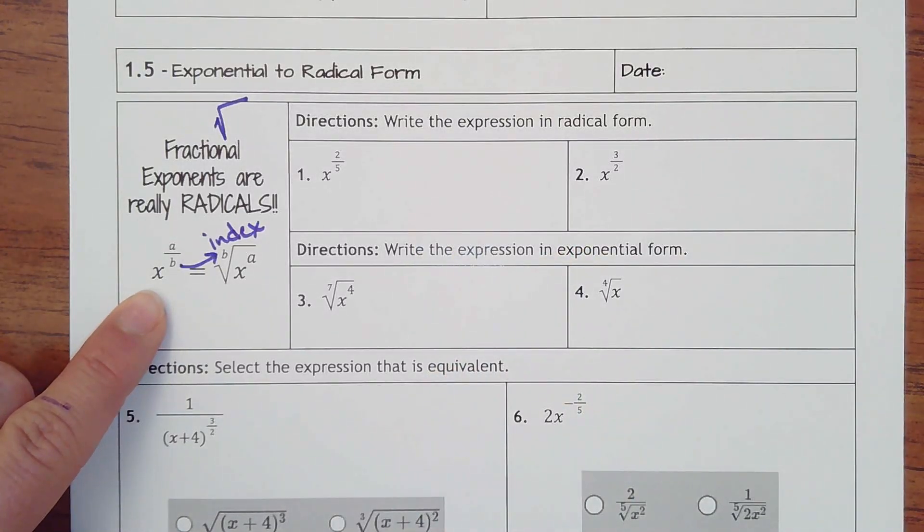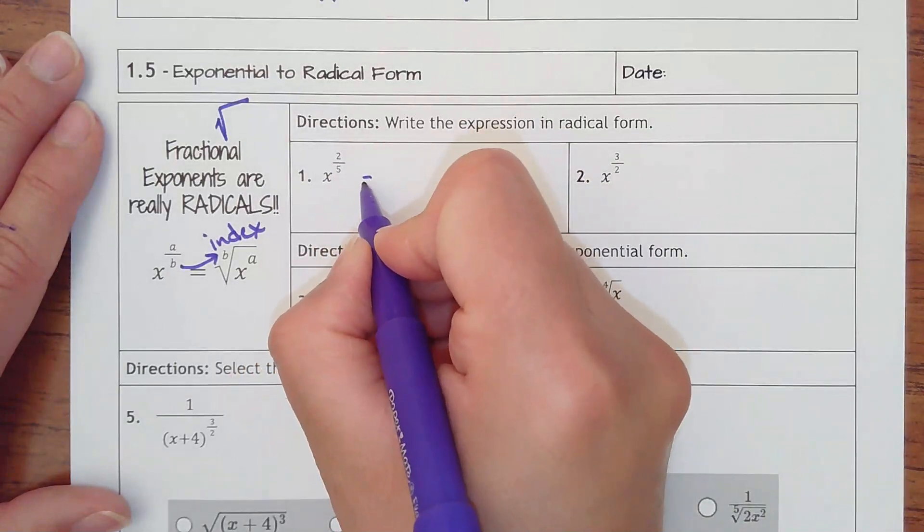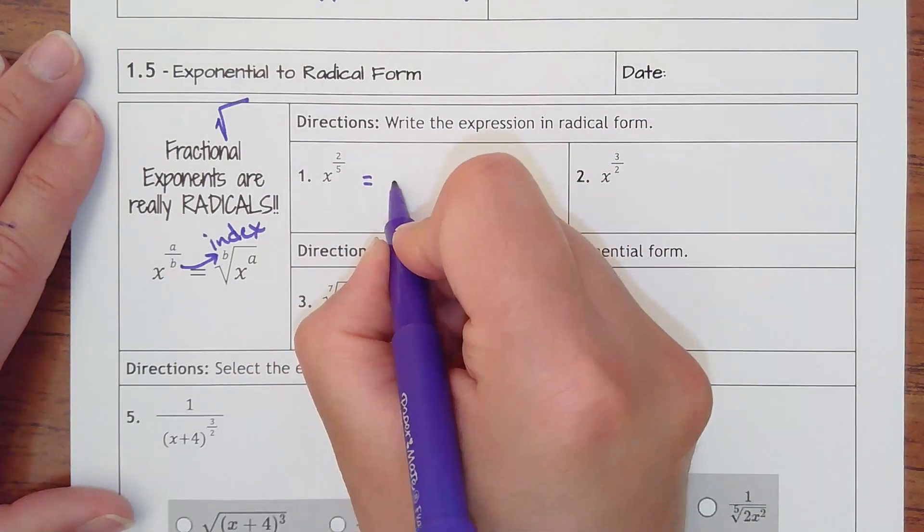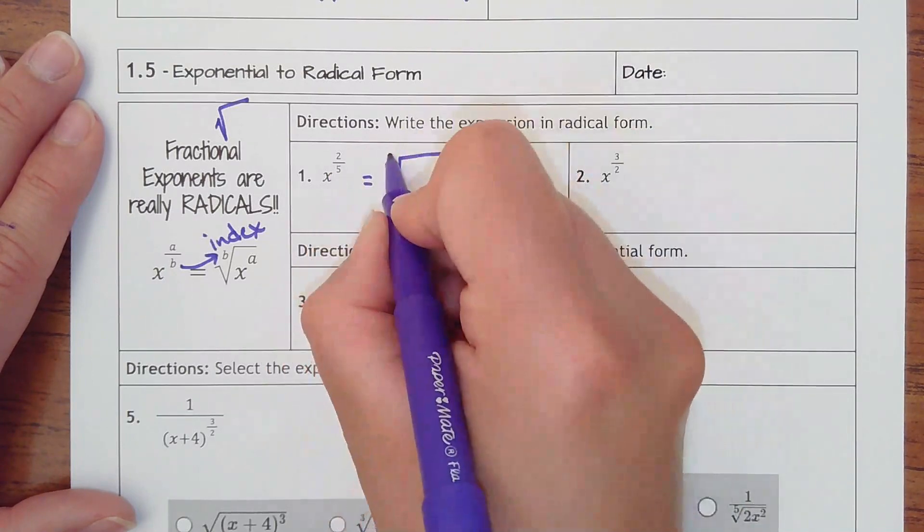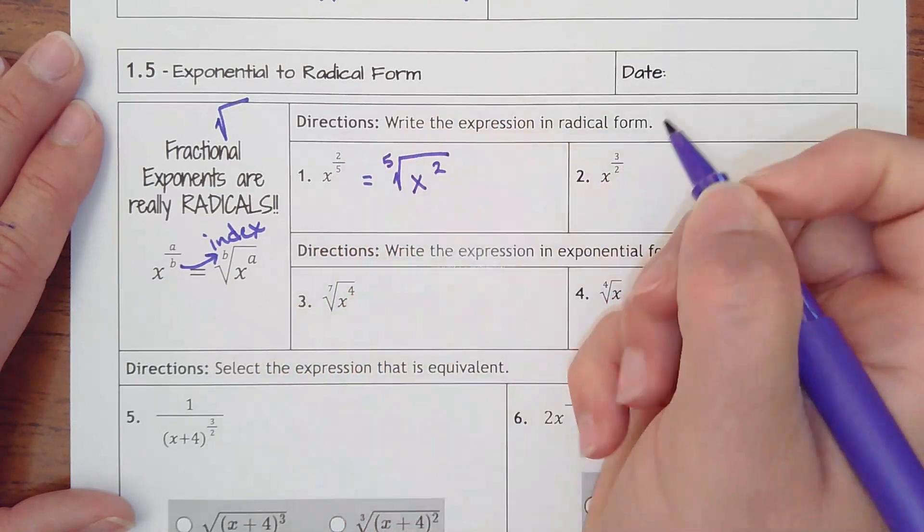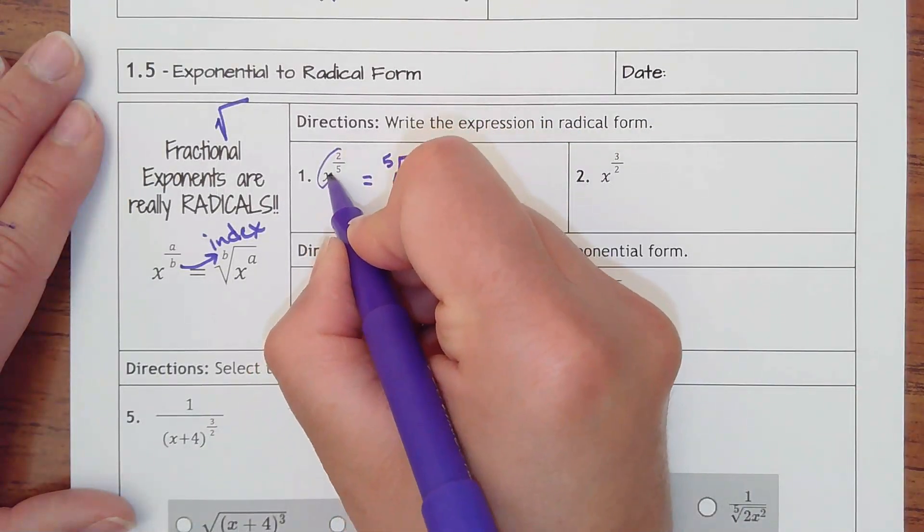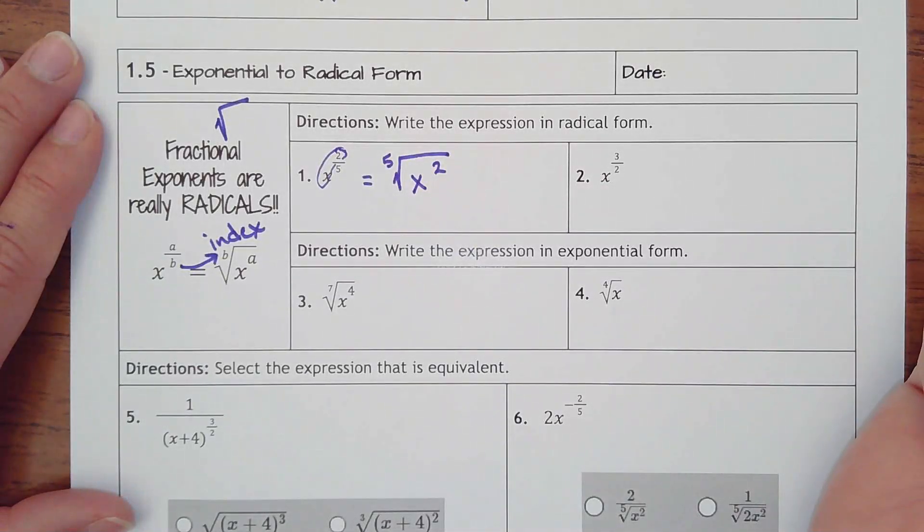So directions in the first two say write the expression in radical form. x to the two-fifths is really the same as this becomes the index, the denominator, so this is a fifth root of x squared. The way I can remember it is since the two's on top, it stays with the x and the five has to move. And that's all you do.